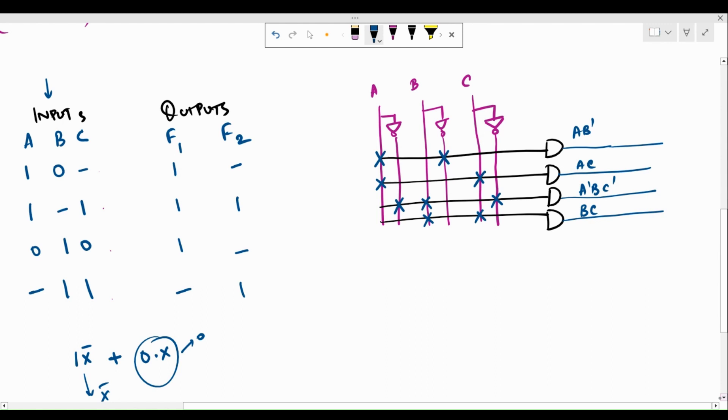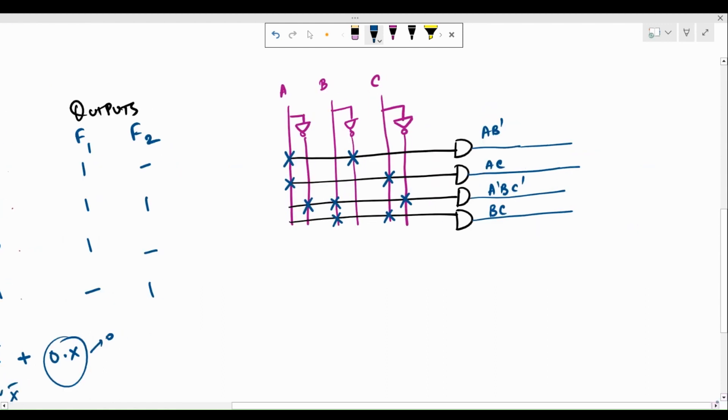So having said this, now we know that we have all our product terms available to us. Out of this, we are going to combine the necessary product terms using the OR gate to frame our functions. So the first output is F1. For F1, we have the first three product terms involved. So it's programmed in this manner. And for F2, we are going to have the second and the fourth one, that is AC and BC. So this and this, they are programmed.